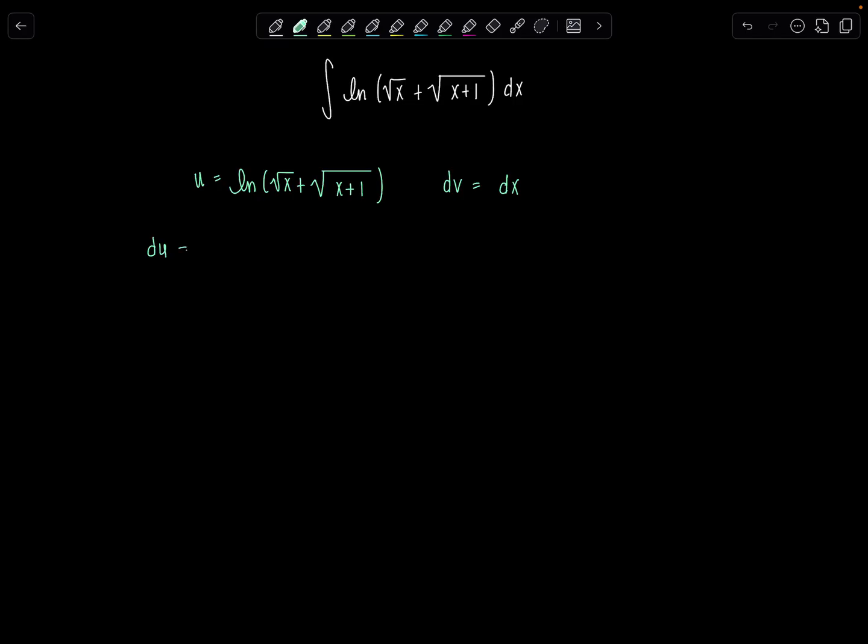So now when we find du, derivative of natural log of something is 1 over the something. And then I have to multiply by the derivative of the something, which involves the chain rule. So derivative of square root of x is 1 half x to the negative 1 half or 1 over 2 rad x. And then similarly, derivative of square root of x plus 1 would just be 1 over 2 rad x plus 1 dx.